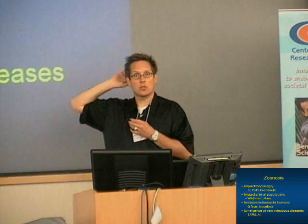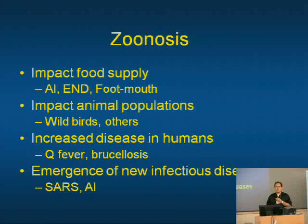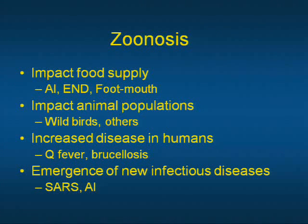Exotic Newcastle disease, which is also a poultry disease, and other livestock diseases can certainly impact other animal populations, including wild animals and wild birds. Certainly we can see increased disease in humans — things like Q fever and brucellosis, which we see in farmers and farm hands on a regular basis. But also the emergence of new infections, with SARS being a classic example that had a lot to do with food supply and zoonoses.